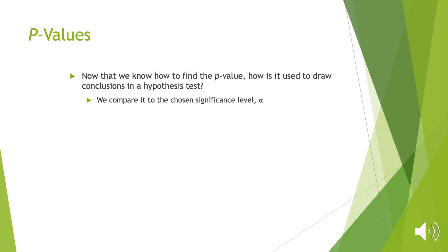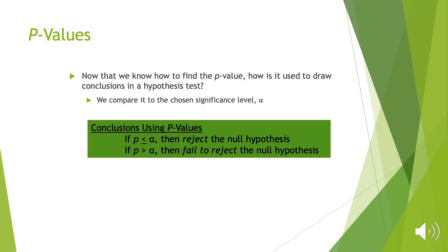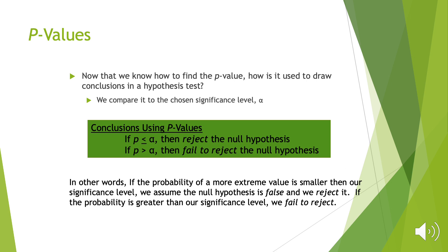In research, sometimes the p-value alone is enough to convince people the null is incorrect. The lower the p-value, the stronger the evidence against the null. For our purposes, if the p-value is less than alpha, we reject the null. If it's greater than alpha, we fail to reject. Failing to reject doesn't mean we're concluding the null is true — we're just concluding it's not false enough to reject.